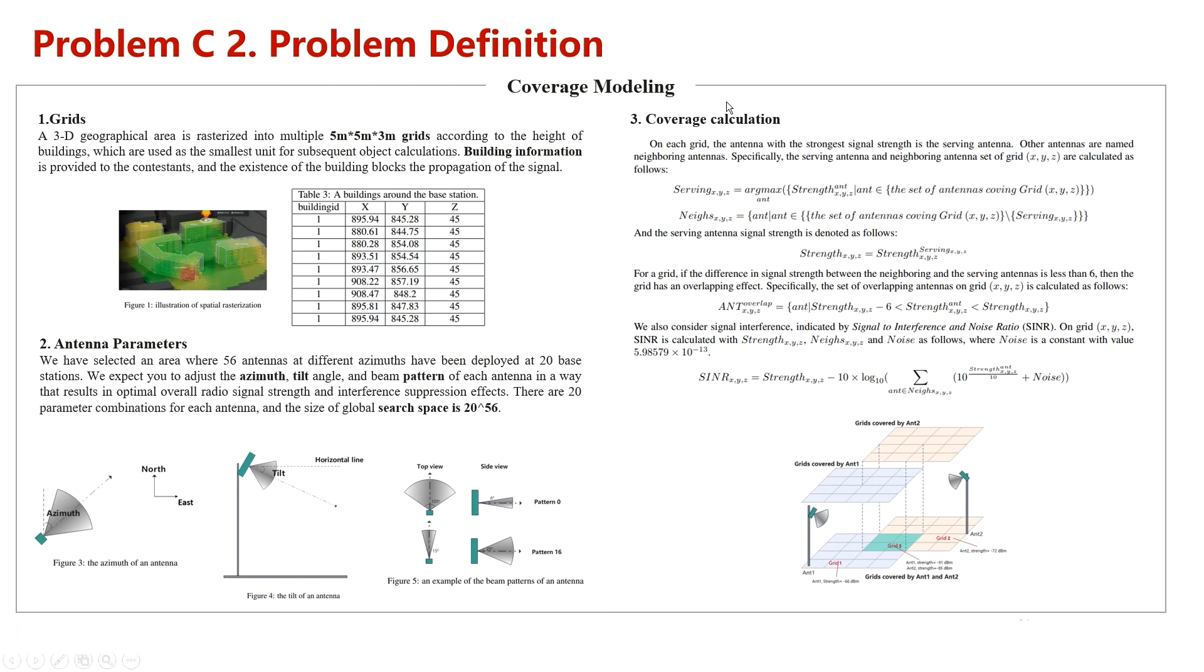Let's go to the coverage calculation. You can take the coverage as the area that an antenna covers. The area is a combination of many grids. In reality, each grid may receive multiple signals from different antennas, but there is only one serving cell, the cell with the strongest received signal, and the other antennas are the neighboring antennas.